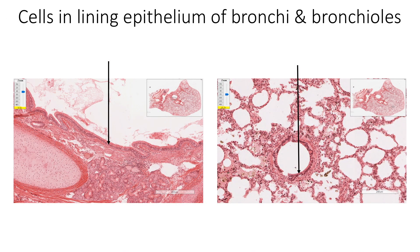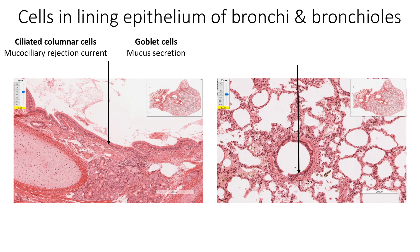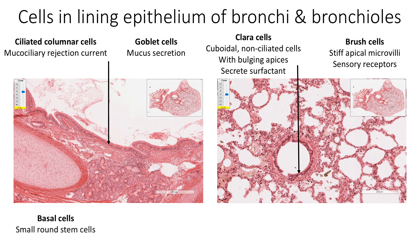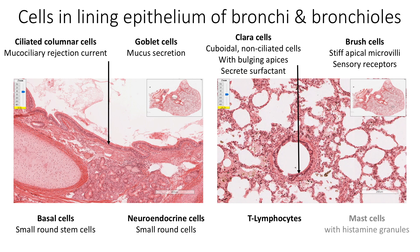The walls of the bronchioles are lined by at least six types of stationary cells and two types of migratory cells. The stationary cells are: ciliated columnar cells, which help in mucociliary rejection current; goblet cells, which help in mucous secretion; Clara cells, which are cuboidal non-ciliated cells with bulging apices that help in secreting surfactant; brush cells, which show stiff apical microvilli and act as sensory receptors; basal cells, which are small round cells acting as stem cells; and neuroendocrine cells, which are small round cells with endocrine secretions. The two types of migratory cells are occasional T-lymphocytes and mast cells with histamine granules.